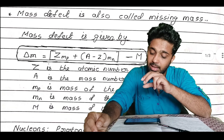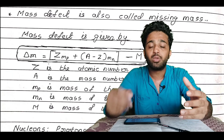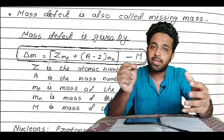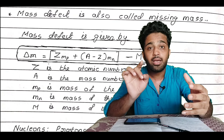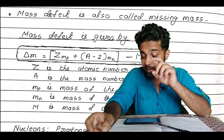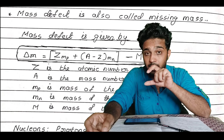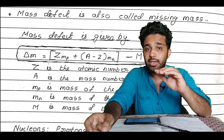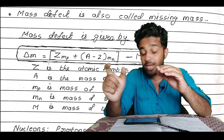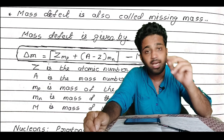Delta m is used to represent the mass defect.